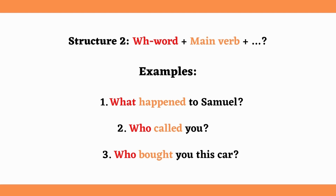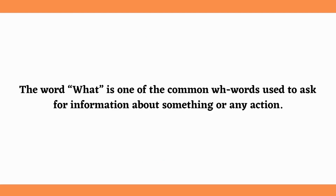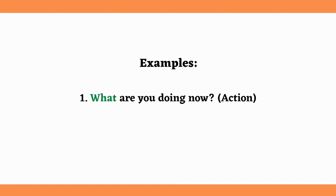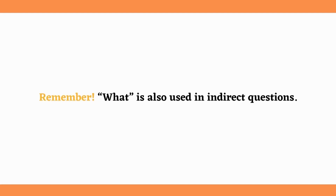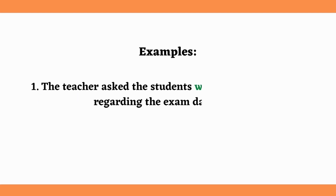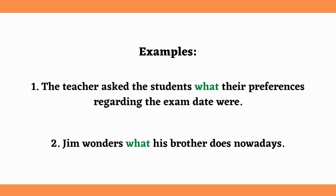Now let's learn more about all the WH words individually. The first one is 'What.' The word 'what' is one of the most common WH words, used to ask for information about something or any action. For example: What are you doing now? — Here the speaker asks about the action. What are you looking for? — The speaker asks about something the other person is looking for. Remember, 'what' is also used in indirect questions. For example: The teacher asked the students what their preferences regarding the exam date were. Jim wonders what his brother does nowadays.